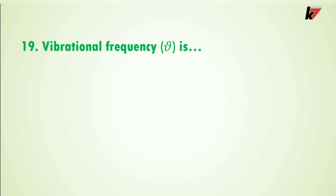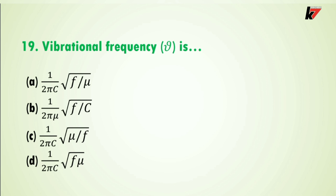Question 19: vibrational frequency is — the correct answer is option A: 1/(2πc) × √(F/μ). By this formula we can calculate the stretching frequency of any molecule. Here μ (reduced mass) is inversely proportional to stretching frequency — as reduced mass increases, stretching frequency decreases.